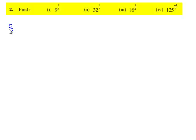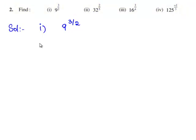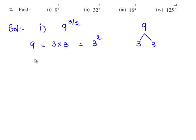Let us first solve the first bit: find 9 raised to the power of 3 by 2. First we shall write 9 in its irreducible factors. The prime factors of 9 are 3 and 3, as 9 can be written as 3 times 3, which is 3 squared. Therefore, 9 raised to the power of 3 by 2 can be written as 3 squared, whole power 3 by 2.